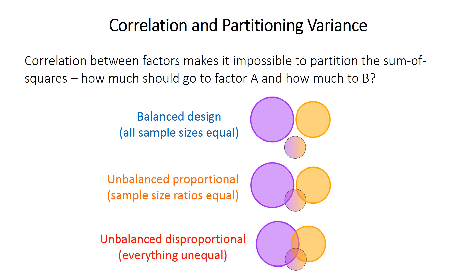In the unbalanced and disproportional design, there are correlations between the variables and with the interactions, indicated by overlapping circles. The overlapping area means the sum of squares for material and phosphate are correlated with each other — some should go to the purple circle and some to the orange, but it's impossible to know how much goes to each.